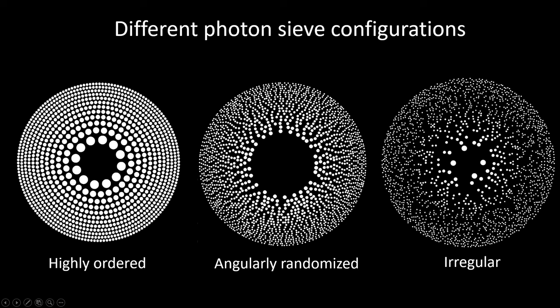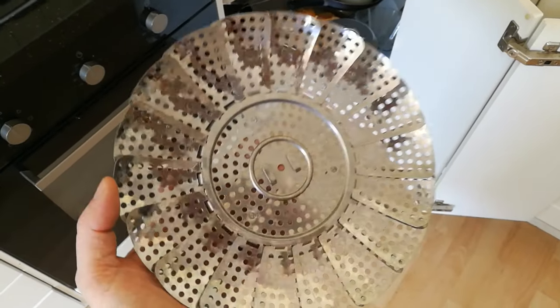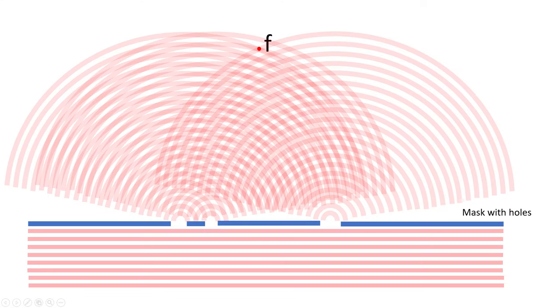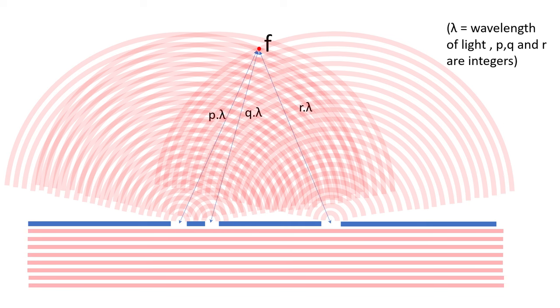The name photon sieve is a bit misleading — they are actually not sieving anything, they just look like sieves. In essence, a photon sieve is just a plate with a large number of tiny holes in it. The size of these apertures is of the same order of magnitude as the wavelength of light, and that is why light is not passing through them in a straight line but is diffracted in various directions. The holes are not placed randomly; each hole is exactly in the right location so that it can work together with other apertures to create, for example, a focal point, and in this way they can collectively act as a lens.